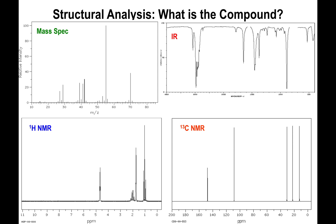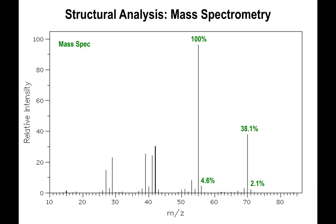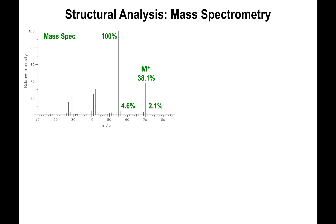The first thing we need to do is look at the mass spectrum. For this molecule, the peaks that appear highest in the spectrum are the peak at m/z 70 with 38.1% and the peak at 71 with 2.1%. These two peaks represent your M+ and your M+1 peaks. Now that we recognize M+ at 70, we need to scale it back to 100%.